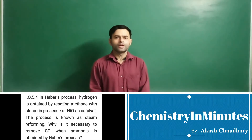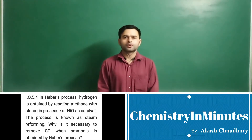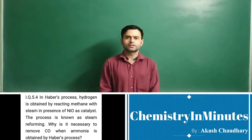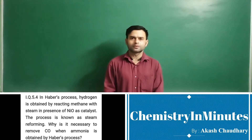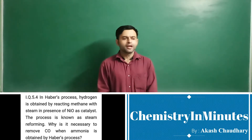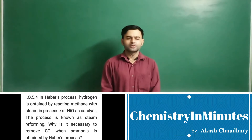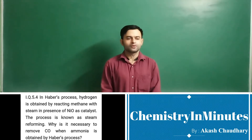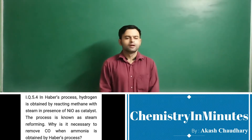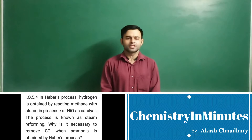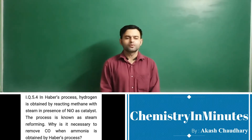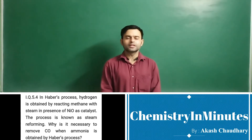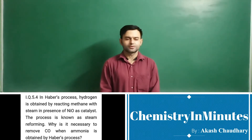Hello my dear friends. Welcome to Chemistry Universe. The question now appearing on our screen is in-text question 5.4. The question is: in Haber's process, hydrogen is obtained by reacting methane with steam in the presence of nickel oxide as catalyst. The process is known as steam reforming. Why is it necessary to remove CO when ammonia is obtained by Haber's process?